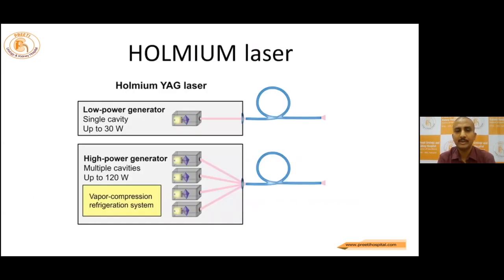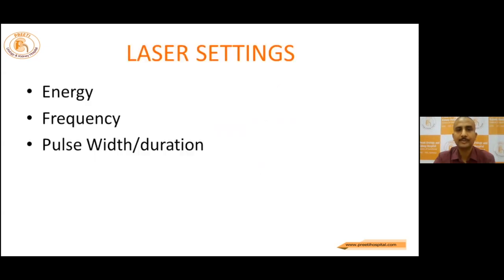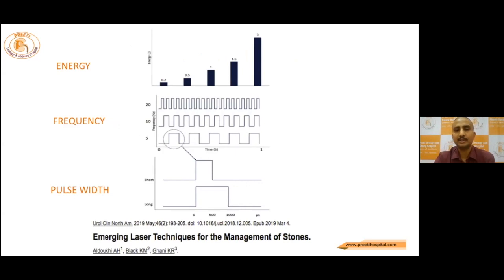We will discuss the Holmium laser first. Without going into the details of the machine — which contains mirrors with the Nd:YAG crystal doped with Holmium ions — before entering into the settings commonly used, I would like to cover energy, frequency, and pulse duration. Energy is the force with which you are hitting the stone; frequency is the number of times you are hitting the stone; and pulse width is the duration of each contact of the laser fiber with the stone — whether it is a short or long duration of contact.